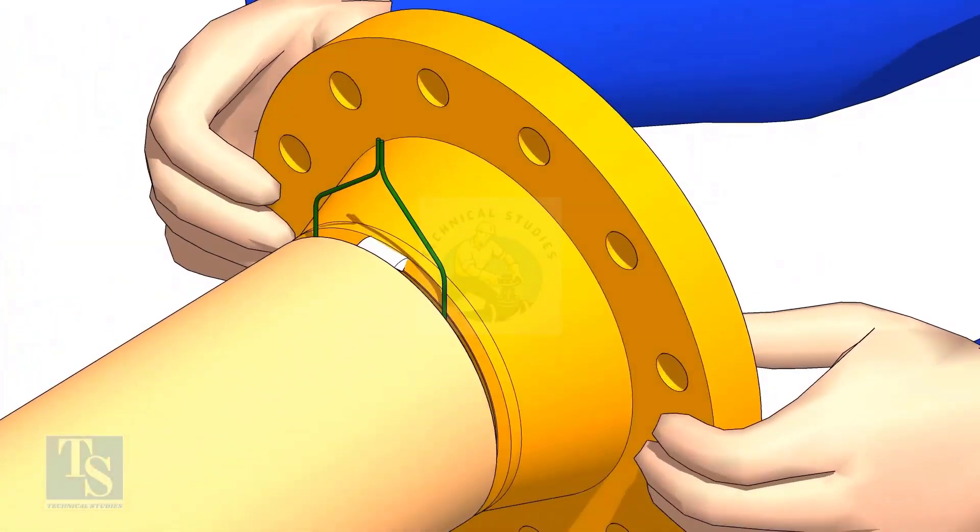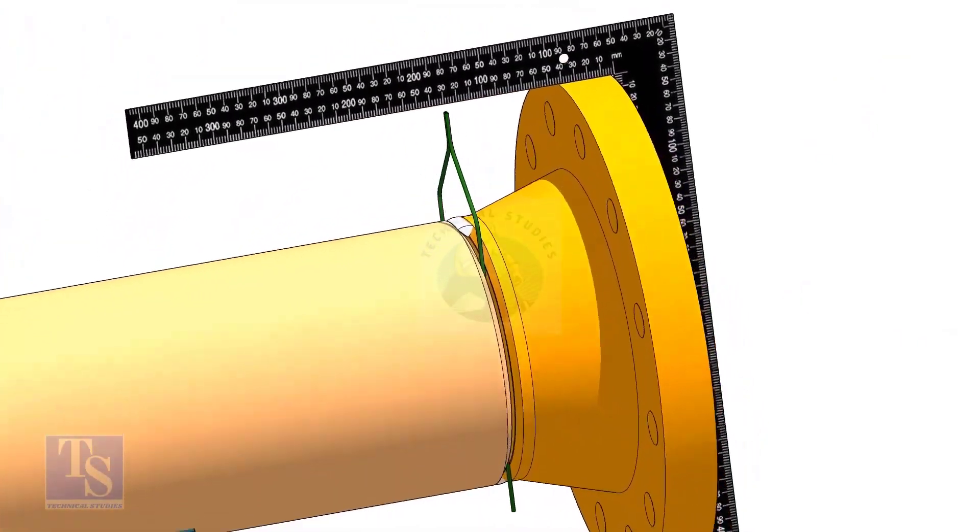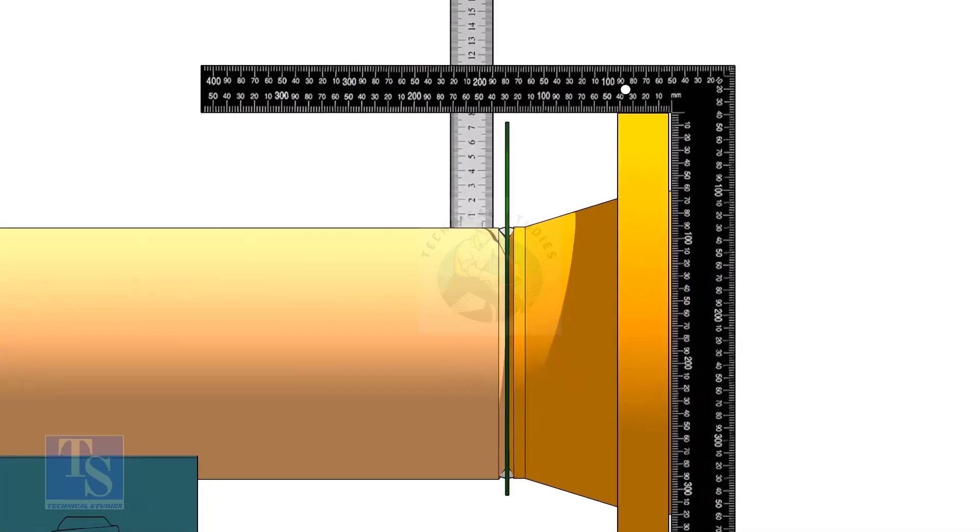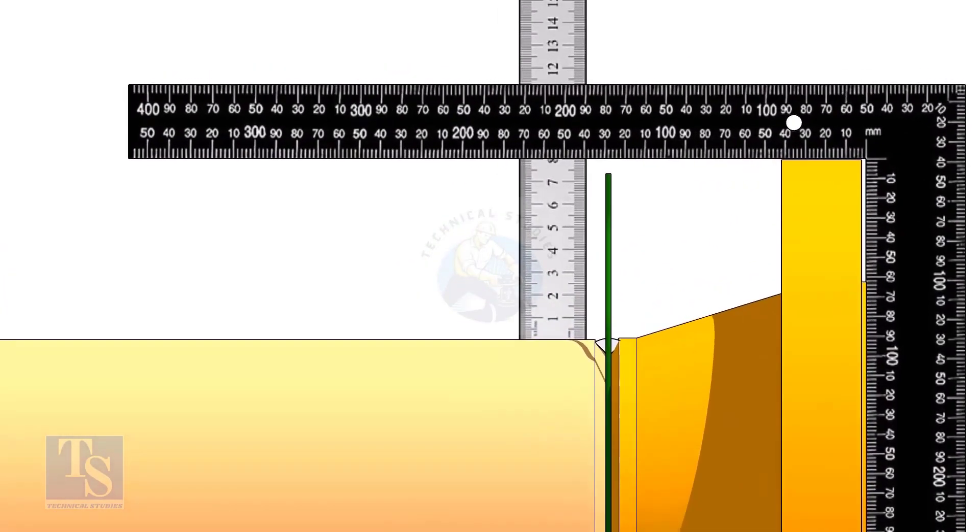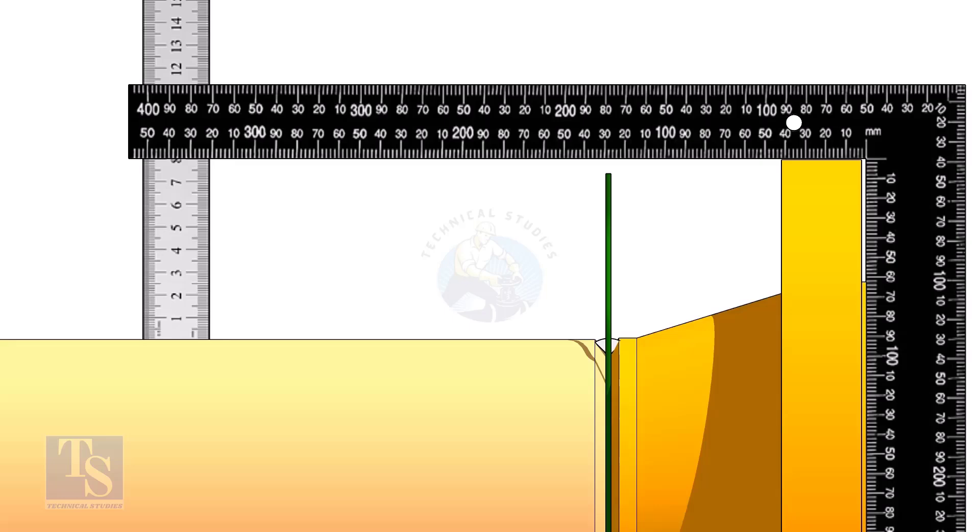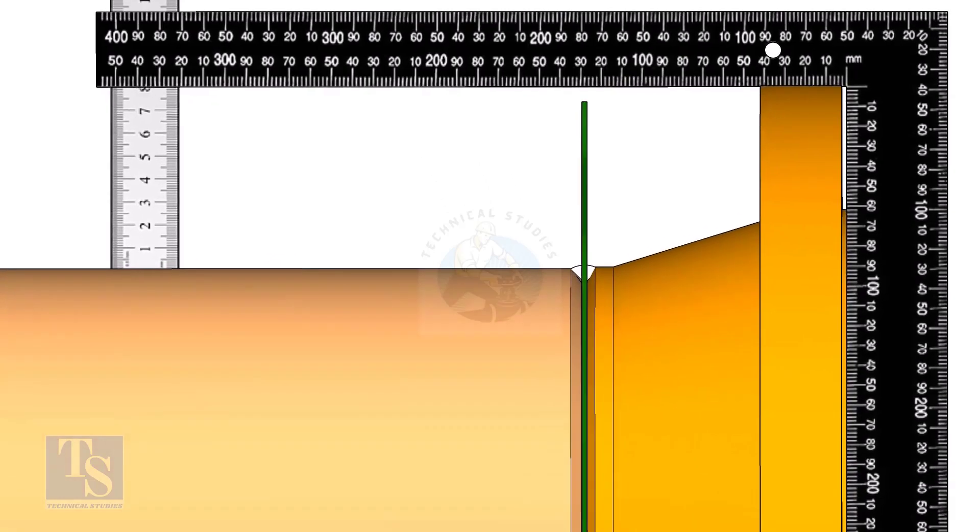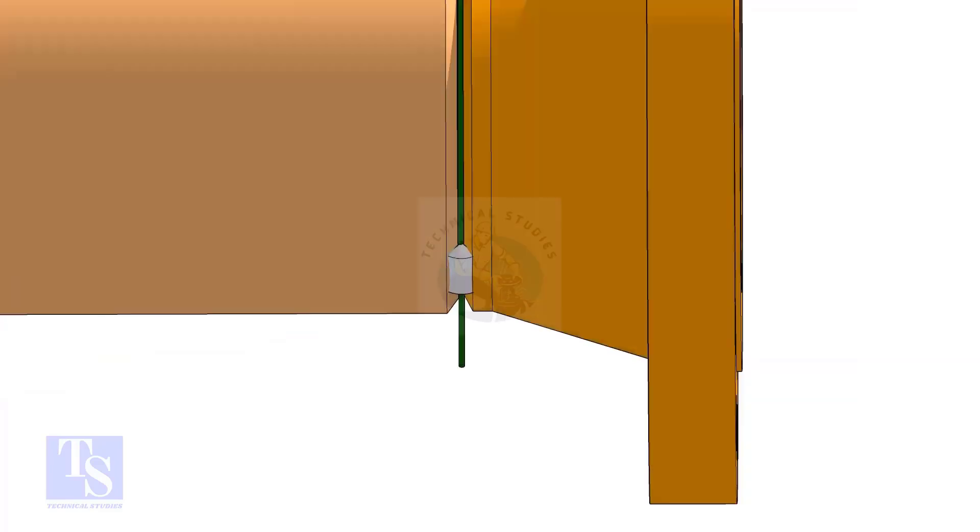Hold the flange with a gap rod in the joint. Tack weld on top side of the joint. Check the squareness of flange face to the pipe as shown. Tack weld at the bottom side of the joint.